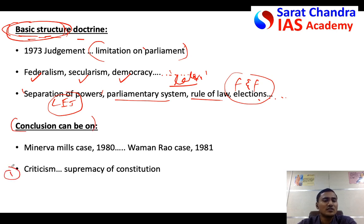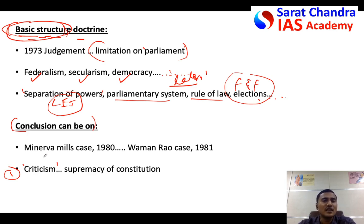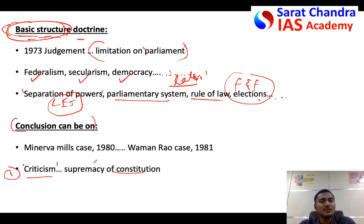One conclusion you can write is that there was criticism against this case — judges are unelected, whereas Parliament consists of elected representatives of the people, so how can unelected judges place limitations on elected representatives? However, you can say this criticism is not valid because the Constitution is supreme — it is supreme over both the legislature and the judiciary — and hence the basic structure doctrine is valid and very important.